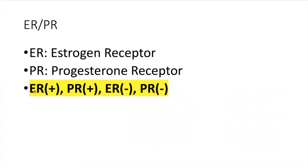So when we say ER-positive, it means a cell has an estrogen receptor, while PR-positive means it has a receptor for progesterone. Conversely, if it's ER-PR-negative, it means the cell does not have any of these receptors.